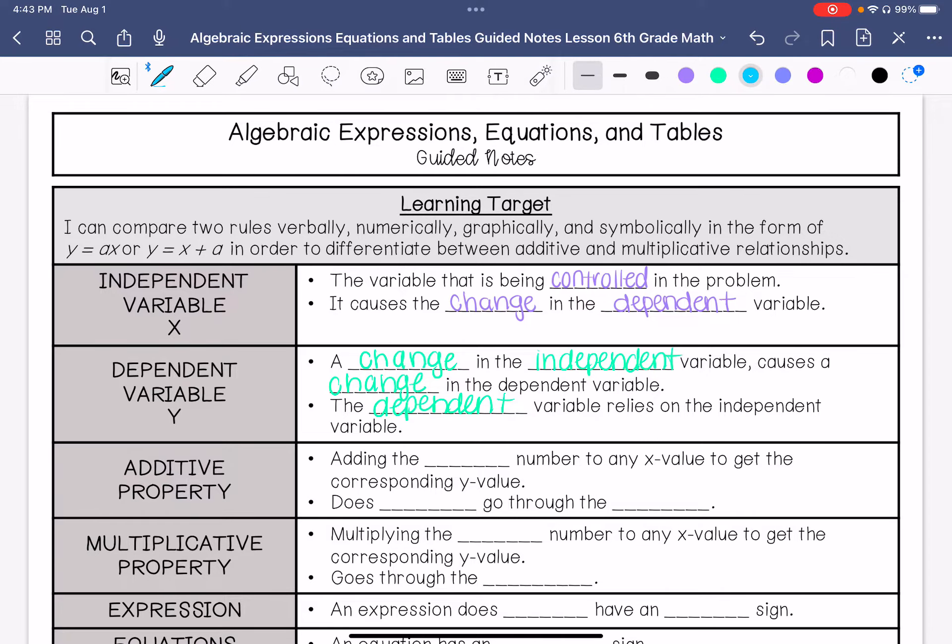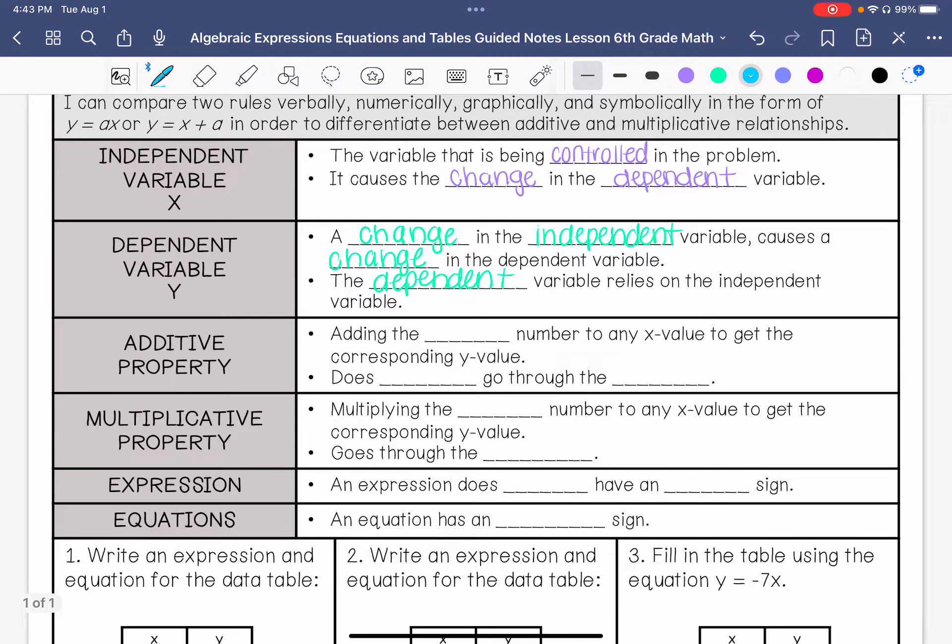So what is the additive property? It is adding the same number to any x value to get a corresponding y value. When we have an equation with an additive property, it does not go through the origin of the graph, which is the coordinates 0, 0.